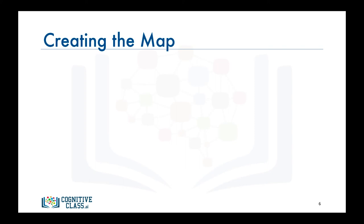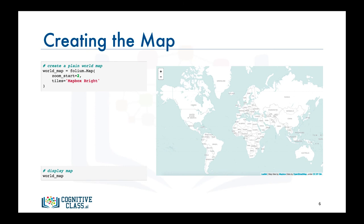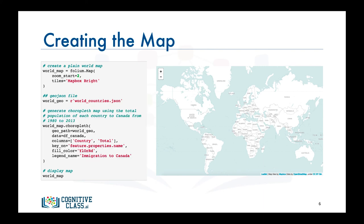We should be experts now in creating world maps with Folium. Let's create a world map using the Mapbox Bright tileset, which displays the name of every country. To convert this map into a choropleth map, we first define a variable pointing to our GeoJSON file. Then we apply the choropleth function to our world map, telling it to use the columns 'country' and 'total' in df_Canada, and to use the country names to look up geospatial information about each country in the GeoJSON file.